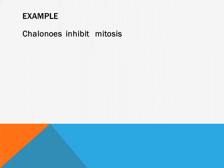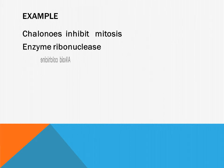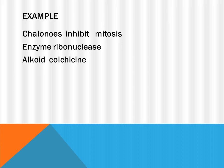Colchicine inhibits the formation of the mitotic spindle and holds the cell in metaphase. Metaphase is a stage in mitotic cell division in which the spindle fibers are formed. X-rays cause uncontrolled mitosis.